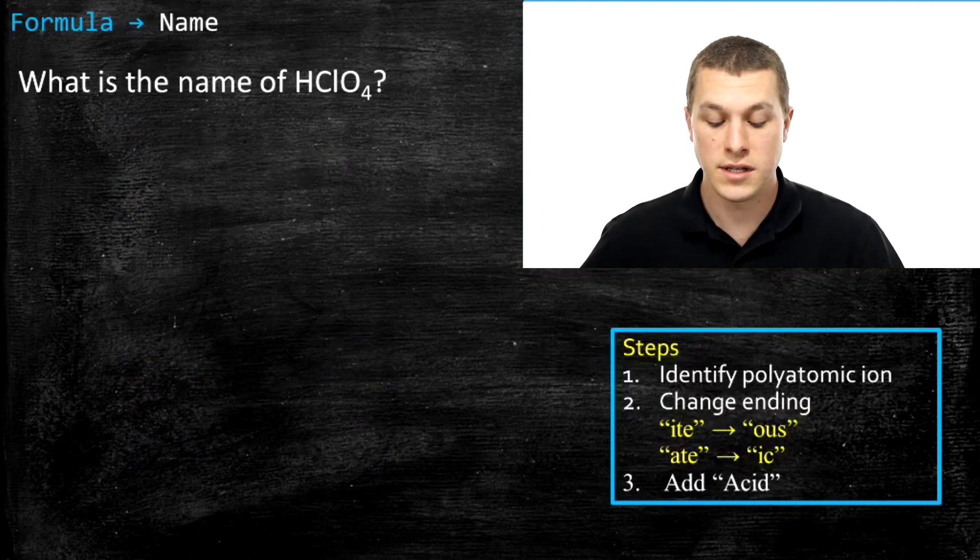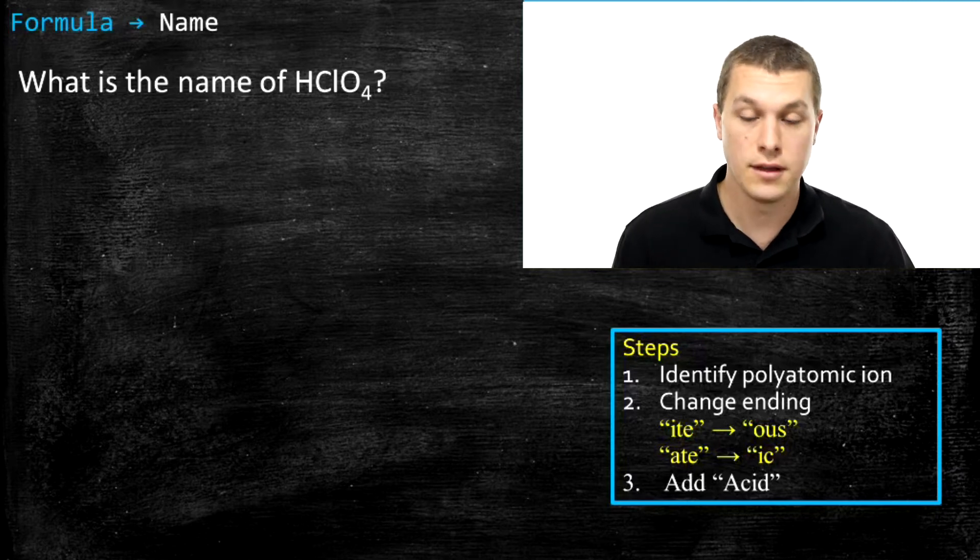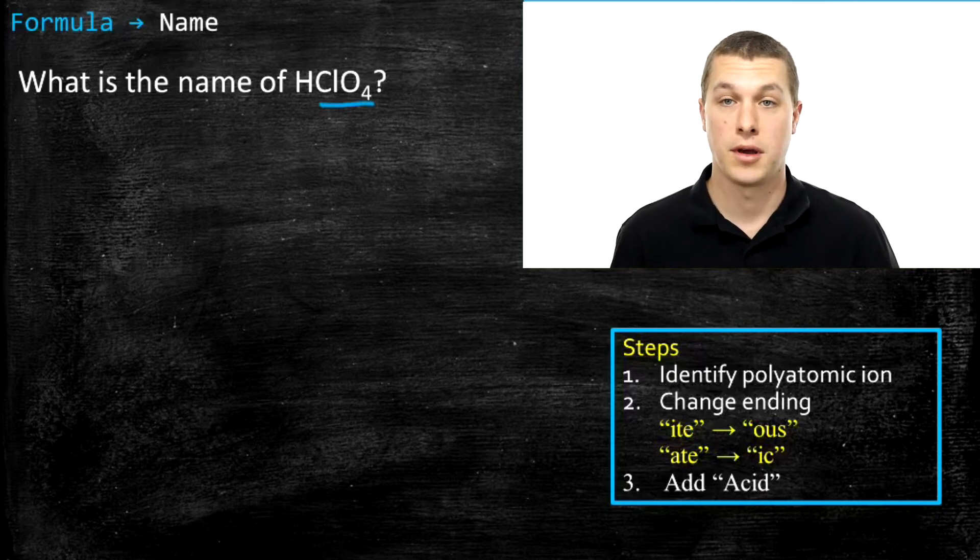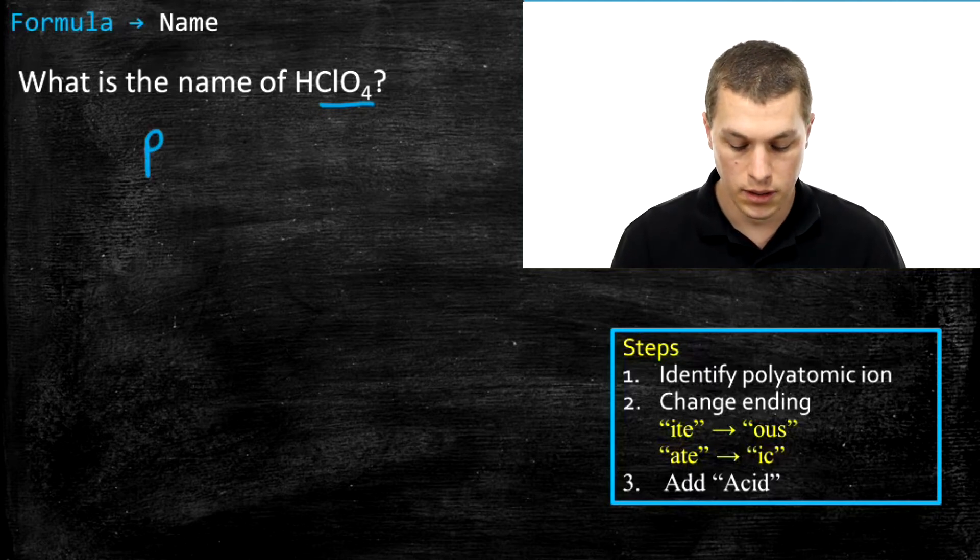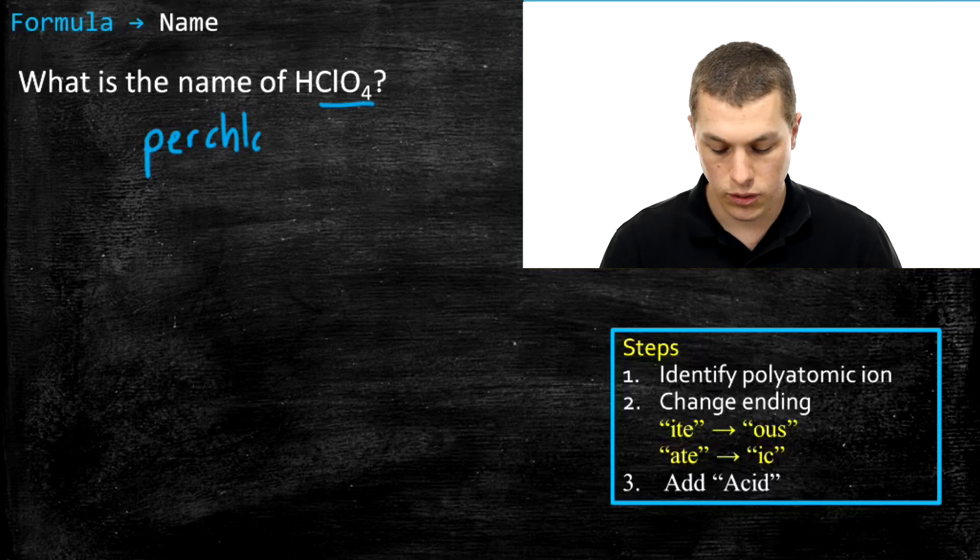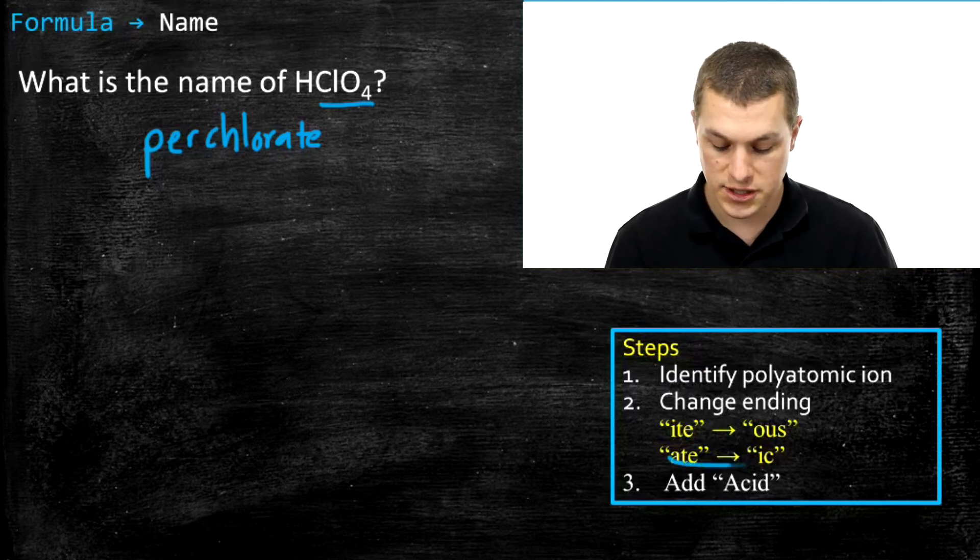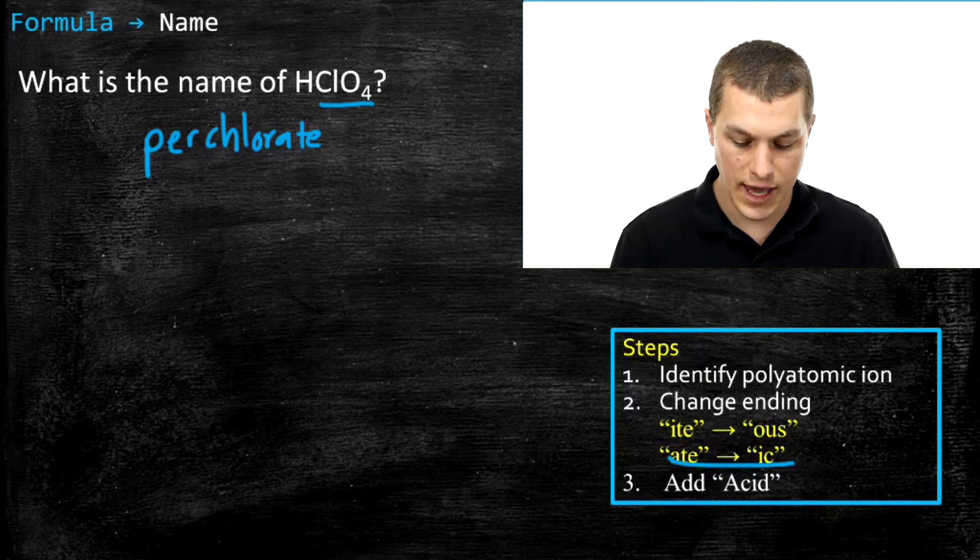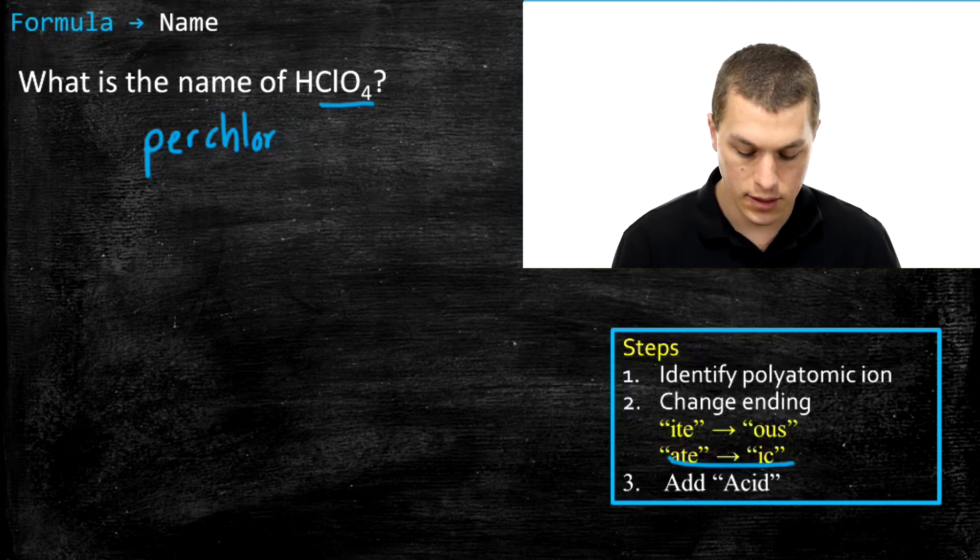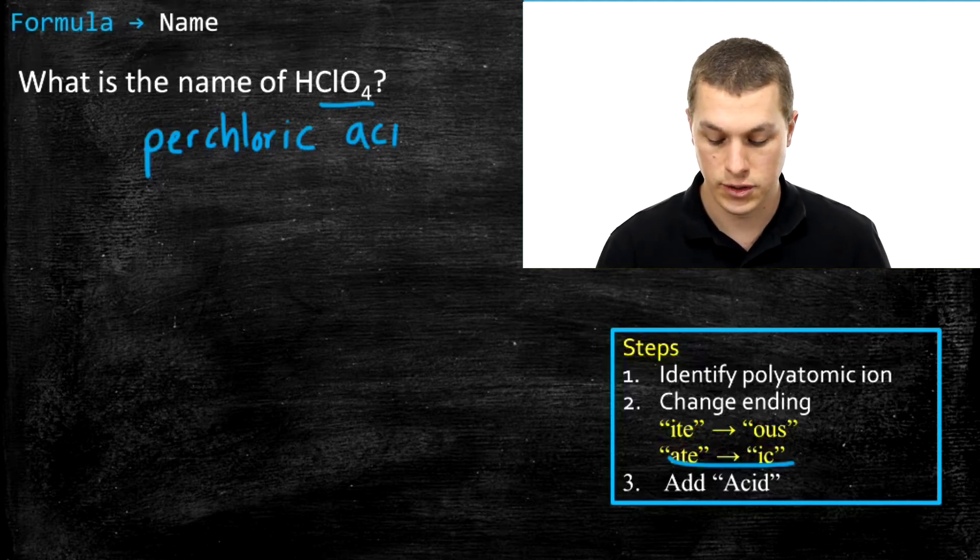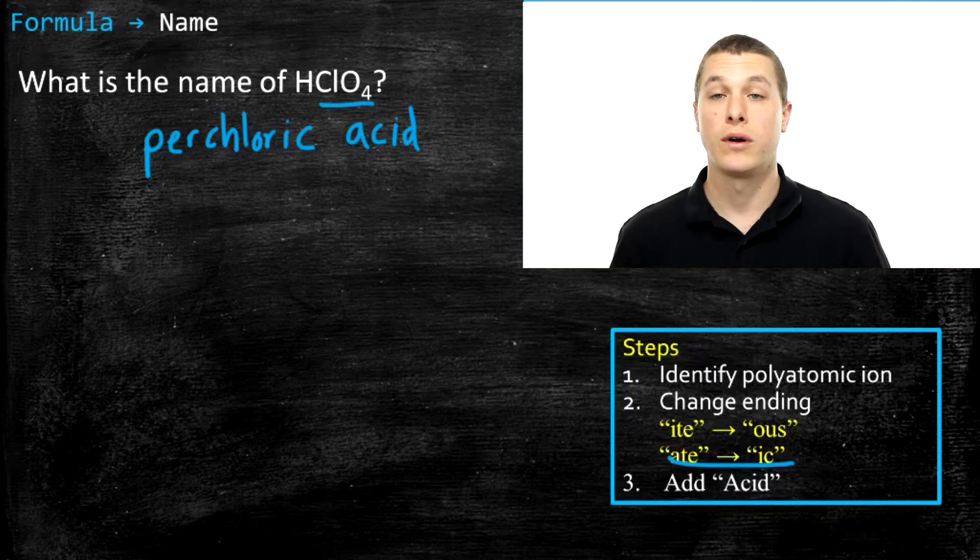This question asks us, what's the name of HClO4? And again, the first step here is just going to be to identify your polyatomic ion. And so if we look at this compound, ClO4 is our polyatomic ion. That turns out to be perchlorate. And if we take a look at our rules, it says whenever we see -ate, we should change it to -ic. And so that means I'm going to erase -ate, and then I'm going to put -ic. So that gives us perchloric. And the last step there is just to name it an acid, to add acid there on the end. So that becomes perchloric acid.